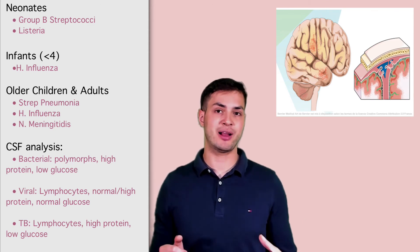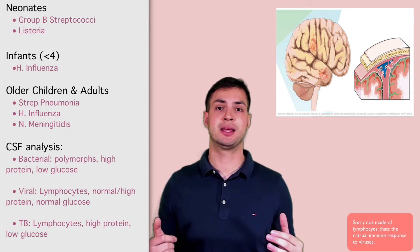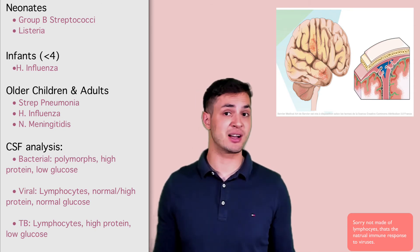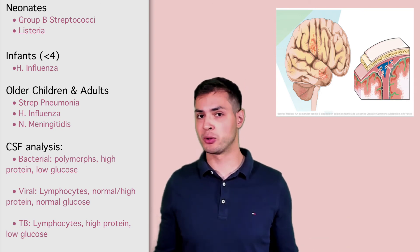Second one I'll talk about is viral. Now viral, as we all know, is made of lymphocytes. So the cell type will be lymphocytes. They'll also be high in protein because viruses are protein and they're going to have normal glucose because the viruses don't eat up all the glucose.